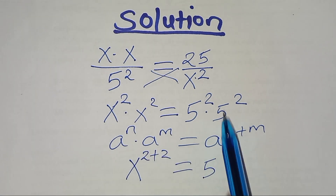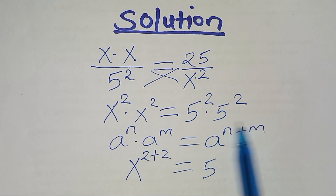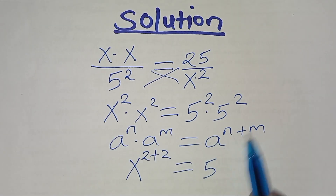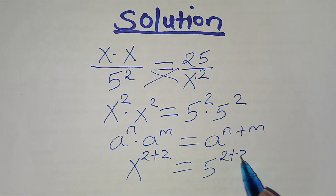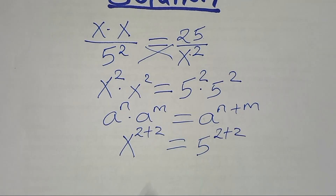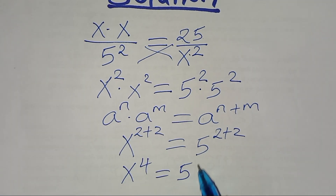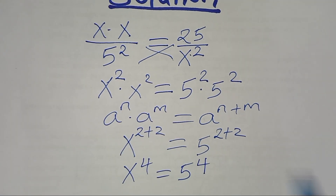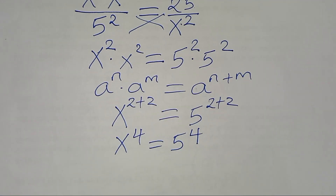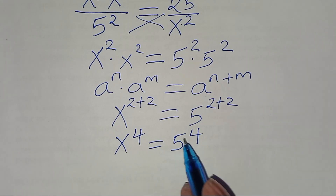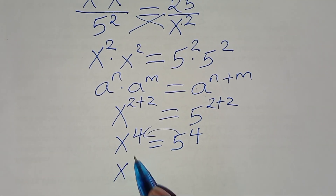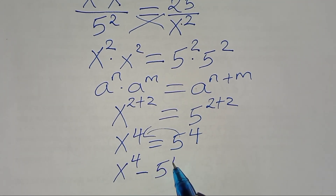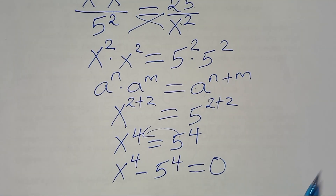Applying this exponent identity gives us 2 plus 2, so we have x to the power 4, which is equal to 5 to the power 4. Taking 5 to the power 4 to the left hand side, we have x to the power 4 subtract 5 to the power 4 equals 0.